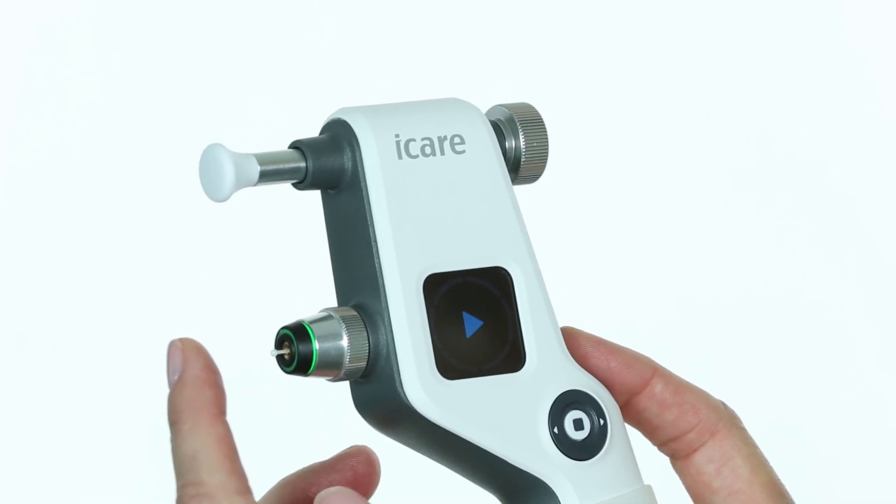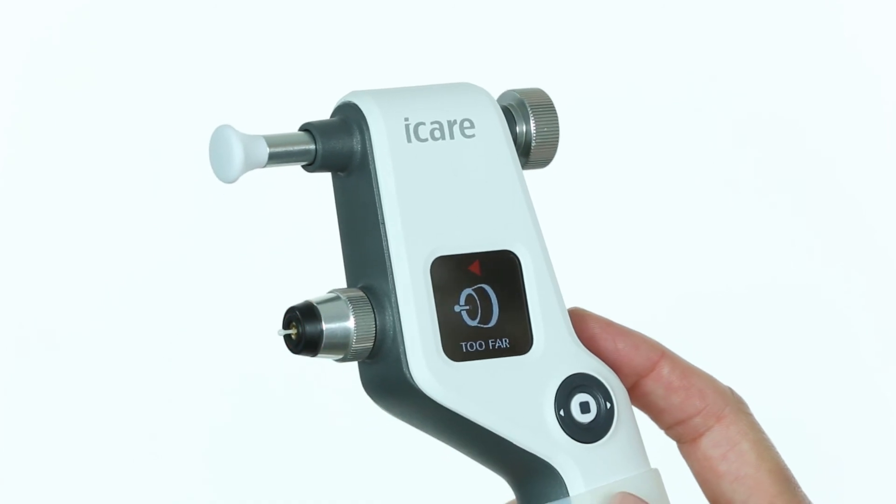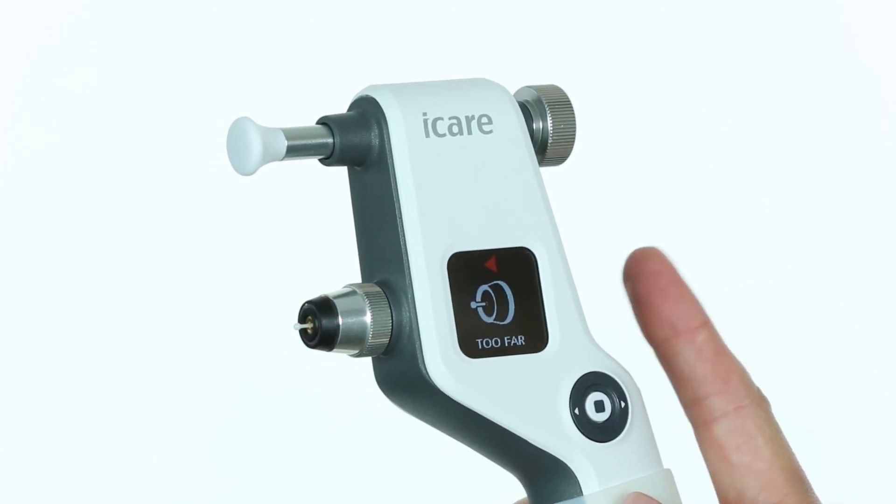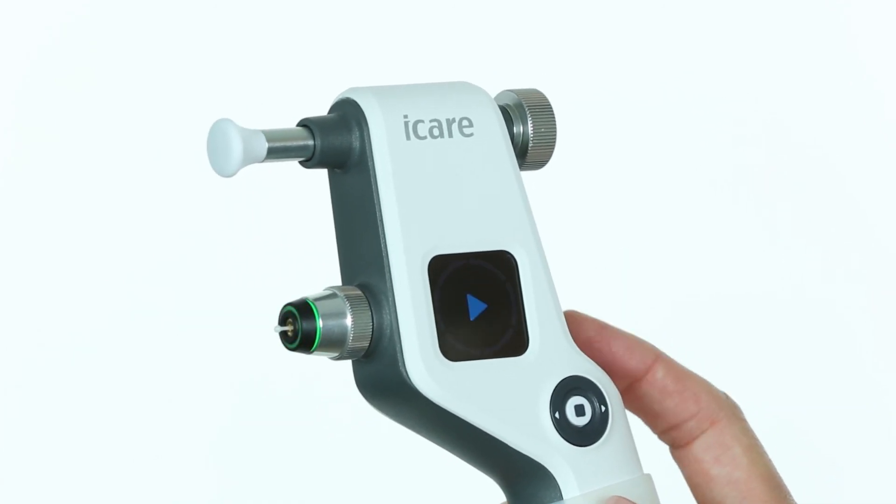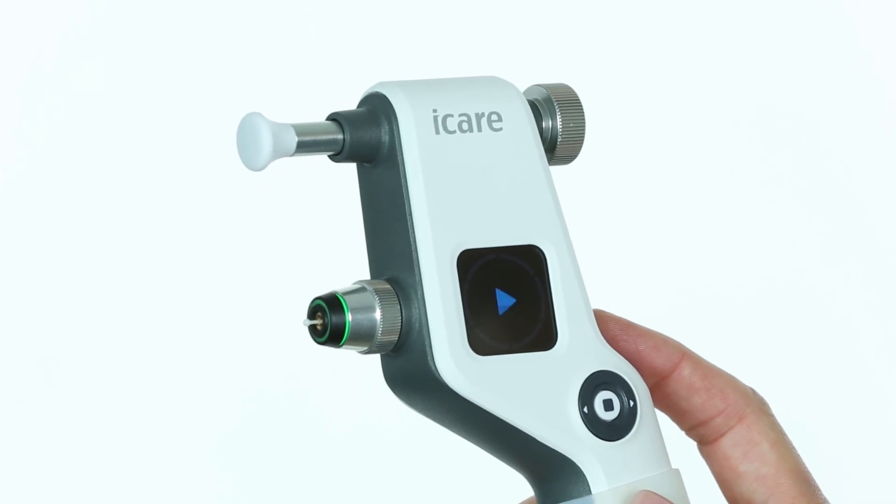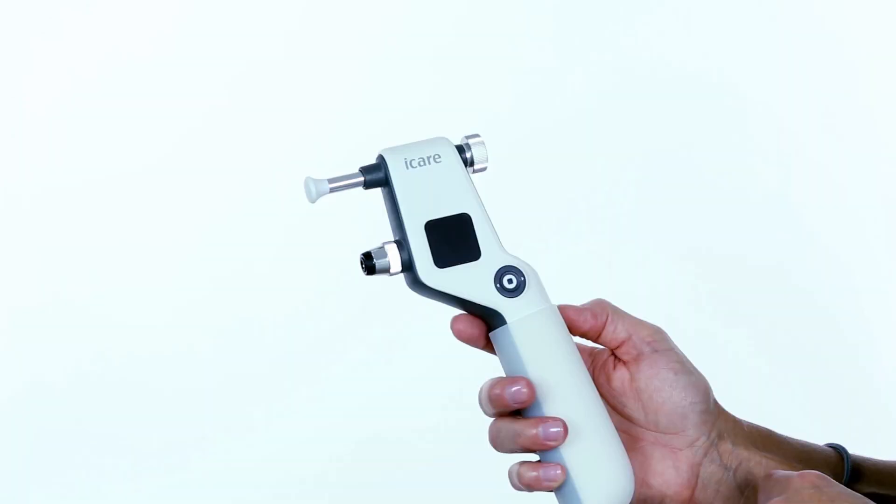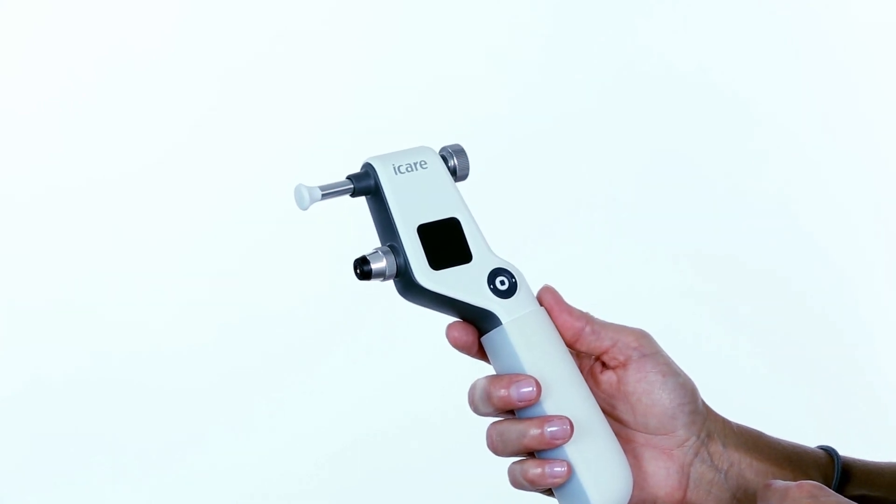If you are too far from the cornea, then too far will show in the display and the probe base light flashes red. Clear the error message, correct alignment, and continue measurement. If the tonometer is not used for 3 minutes, it will turn off automatically.